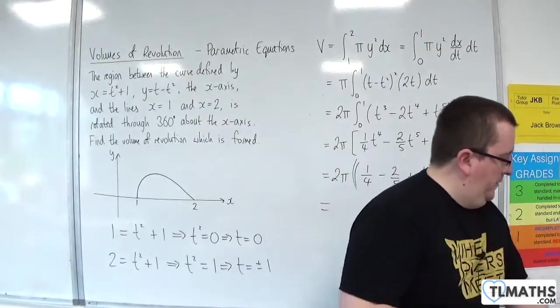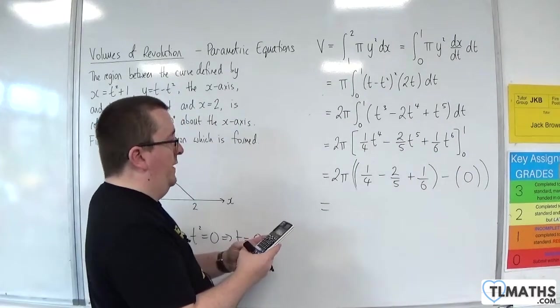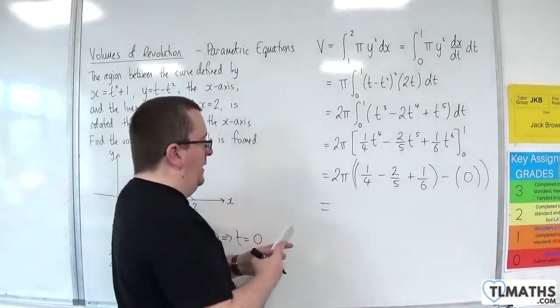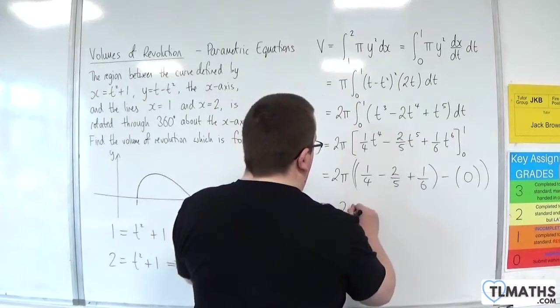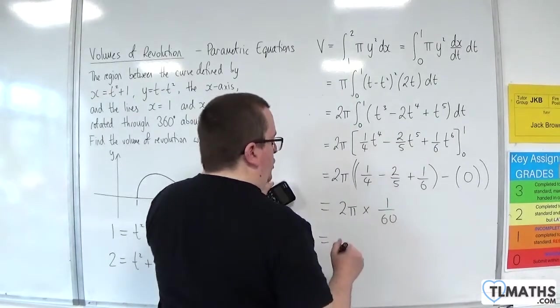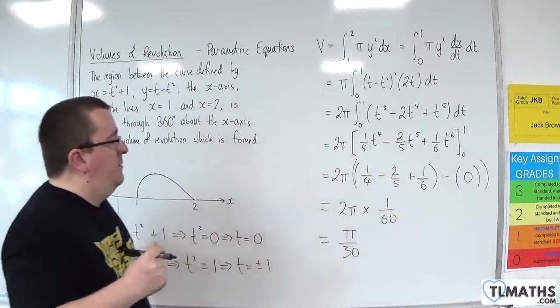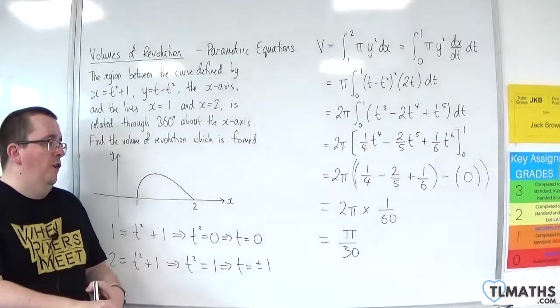So we've got 2 pi times that, so 1 quarter, take away 2 fifths, plus 1 sixth, is 1 over 60. So we've actually got pi over 30. That is the volume formed.